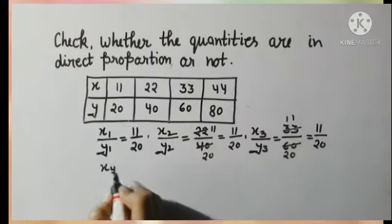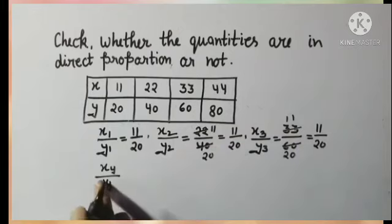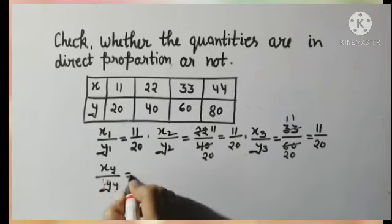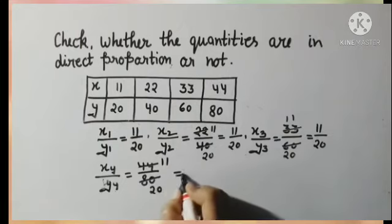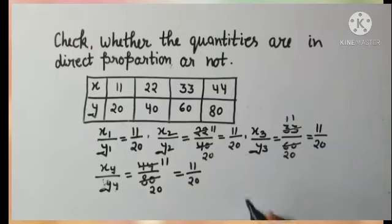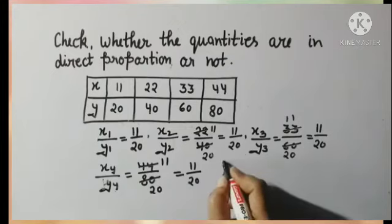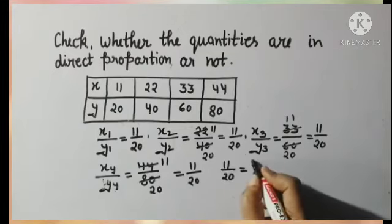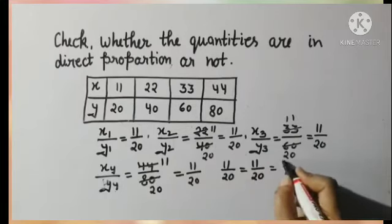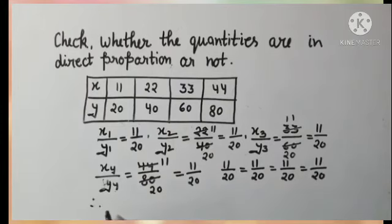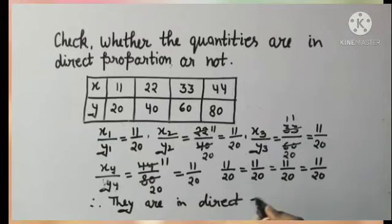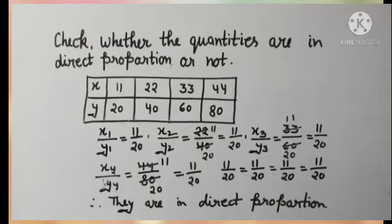Now for the fourth ratio: x4/y4 = 44/80, which reduces to 11/20. From all these answers, each ratio of x and y values is equal to the common value 11/20. Whenever we find the ratio of given values and all ratios come equal to a constant number, we can say they are in direct proportion. So the given values are in direct proportion.